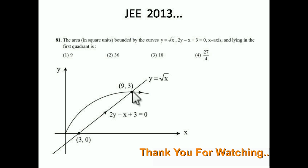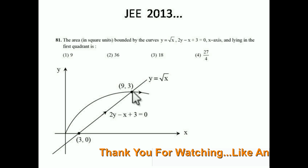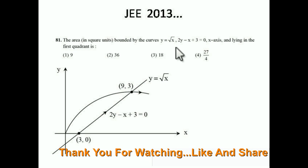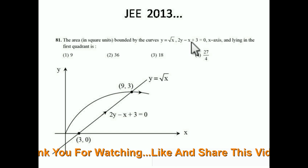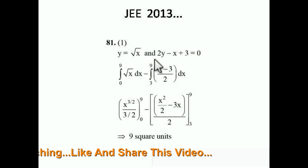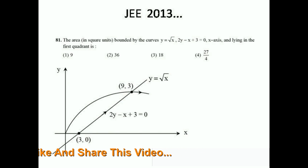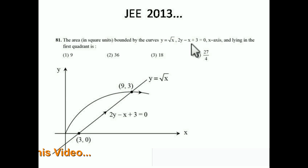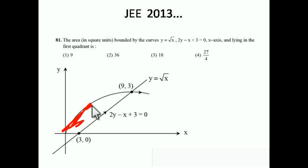Now find the intersection point of the parabola and the line. Since y² = x, substitute x = y² into the line equation to get 2y - y² + 3 = 0. Solving this quadratic gives the intersection point. Now we need to find the area bounded by the parabola, the line, and the x-axis.